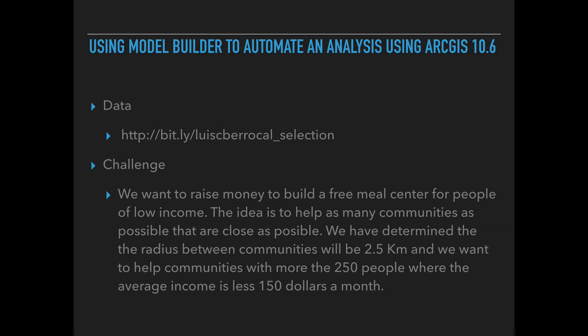I want to help communities with more than 250 people where the average income is less than $150. We came up with 2.5 kilometers because I had already built the model and tested several distances. I'm going to show you how to build that model in order to do this analysis several times without doing it manually.